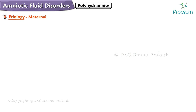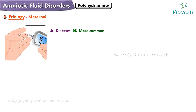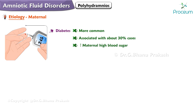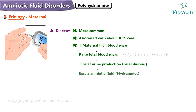Next are the maternal defects. Diabetes is more common in hydramnios — in fact, hydramnios is associated with diabetes in about 30% of cases. It's presumed that a raised maternal blood sugar can potentially raise fetal blood sugar, leading to increased fetal urine production, or fetal diuresis, and in some cases excess amniotic fluid.